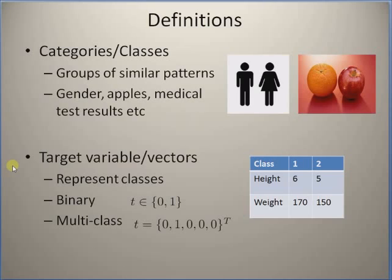The next definition is target variable or target vectors in the case of multiple classes. In binary classification, the target variable is simply either 0 or 1, or minus 1 or plus 1. In the case of multiple classes, this target vector is represented as a set consisting of 0s and 1s, where 1s indicate the class number.